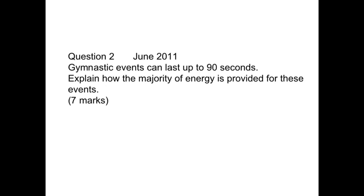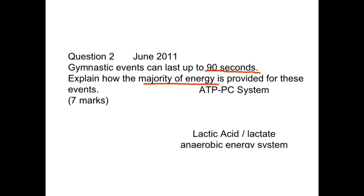The question is worth seven marks. Firstly, think about the duration of the event — 90 seconds — and then how the majority of the energy is provided. Because it is only 90 seconds, we do not need to talk about the aerobic pathway, so nothing about the Krebs cycle or the electron transport chain. The two systems to discuss will be the ATP-PC system and the lactic acid or lactate anaerobic energy system.